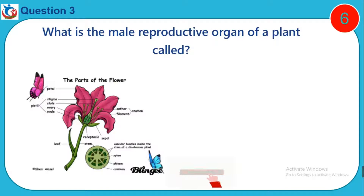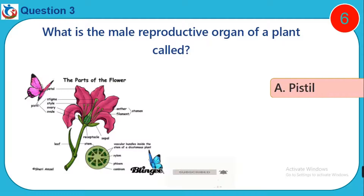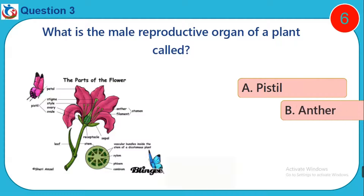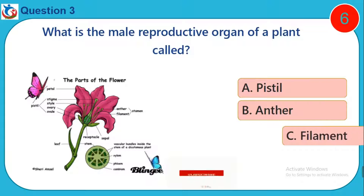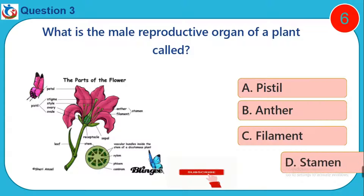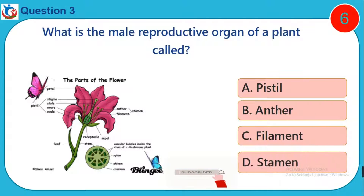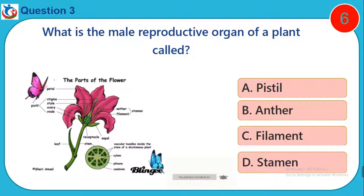Question 3. What is the male reproductive organ of a plant called? A. Pistil. B. Anther. C. Filament. D. Stamen.